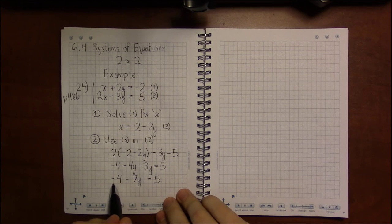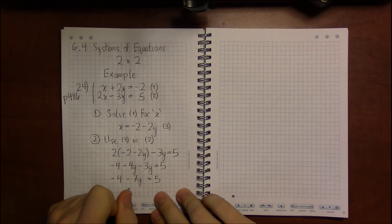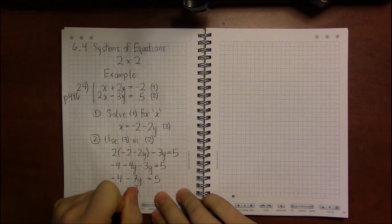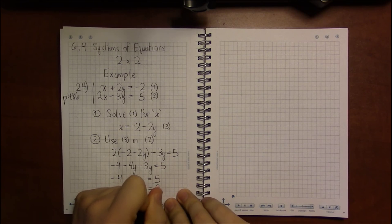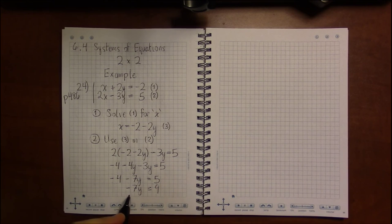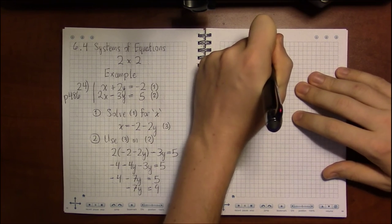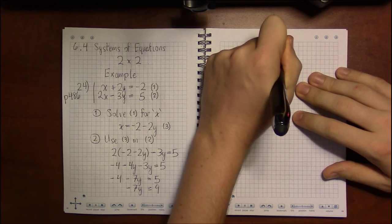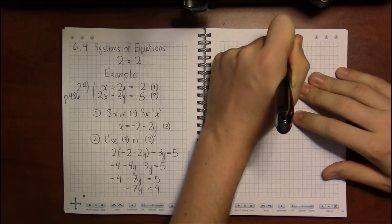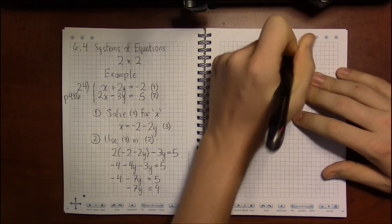Now if we keep going and solve for y, we are going to add 4 to both sides and then arrive at the conclusion that y must be minus 9 over 7.